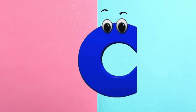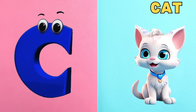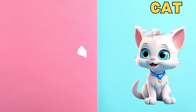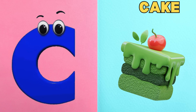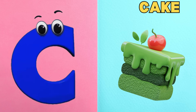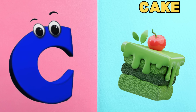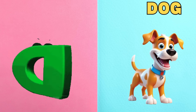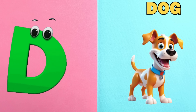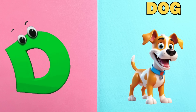C is for Cat. C, C, Cat. C is for Cake. C, C, Cake. D is for Dog. D, D, Dog.